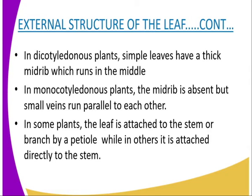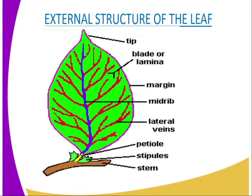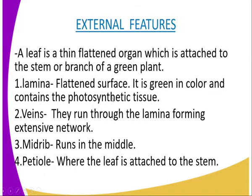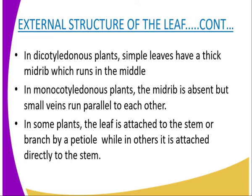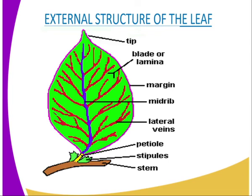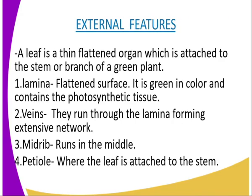Continuing with the external structure of the leaf: in dicotyledonous plants, simple leaves have a big midrib which runs in the middle. In monocotyledonous plants, the midrib is absent but small veins run parallel to each other. An example of a monocotyledonous plant is the maize plant, and an example of a dicotyledonous plant is the bean plant. You should be able to differentiate between the two.